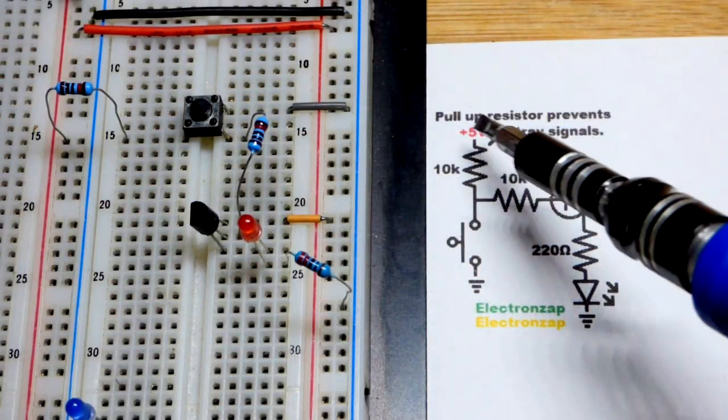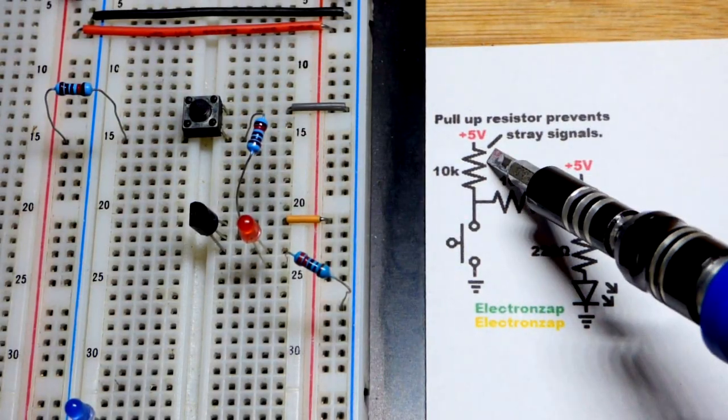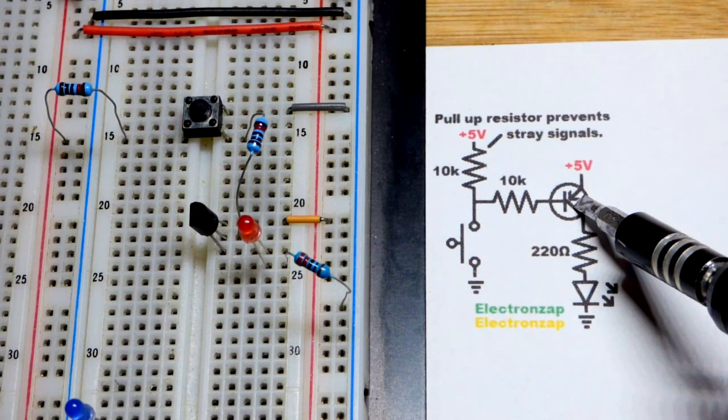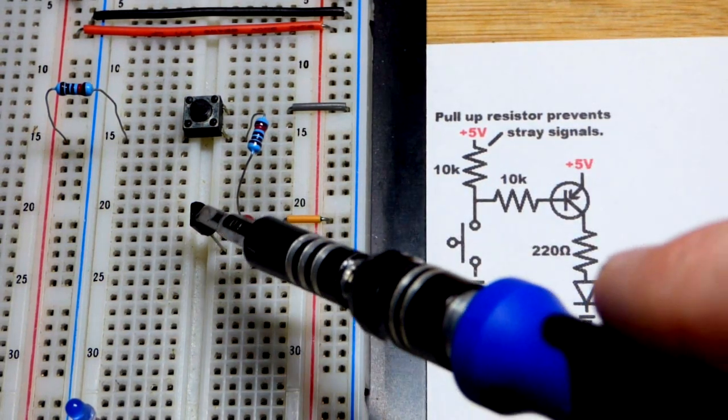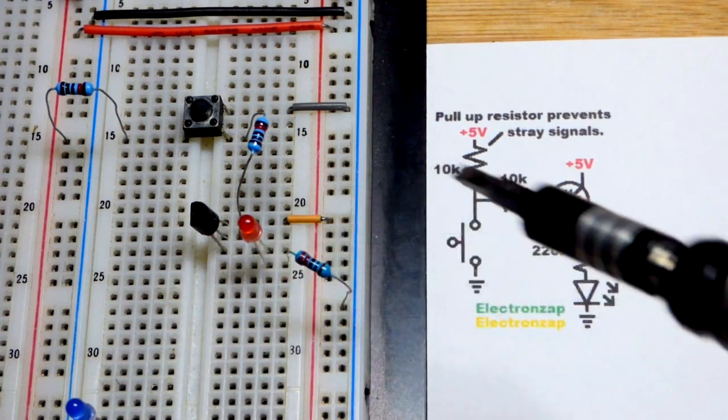In this video we're going to look at the pull-up resistor. We have a PNP bipolar junction transistor wired as a switch. This is a 2N3906.